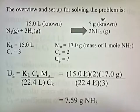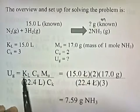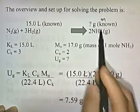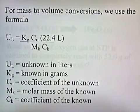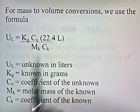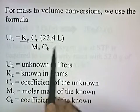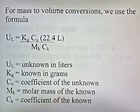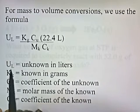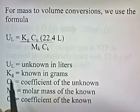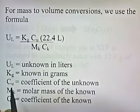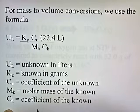That was a volume to mass conversion — liters to grams. For a mass to volume conversion, we use a different formula: UL equals KG times CU times 22.4 liters, divided by MK times CK. UL is the unknown in liters, KG is the known in grams, CU is the coefficient of the unknown, MK is the molar mass of the known, and CK is the coefficient of the known.